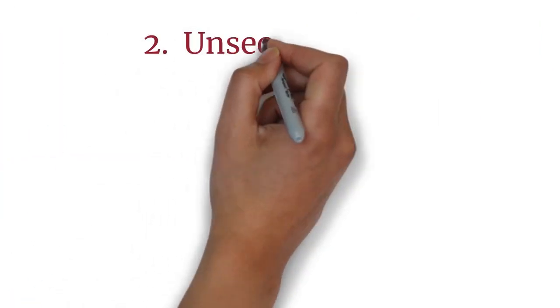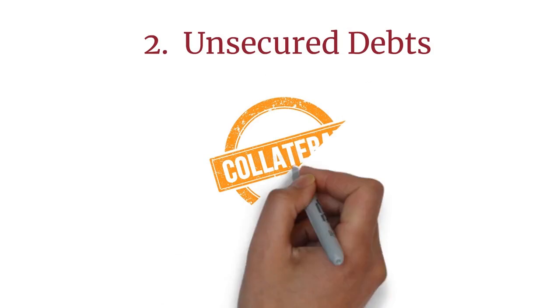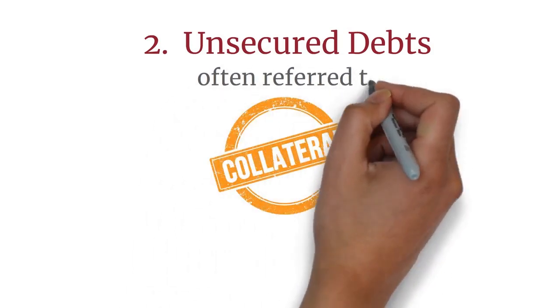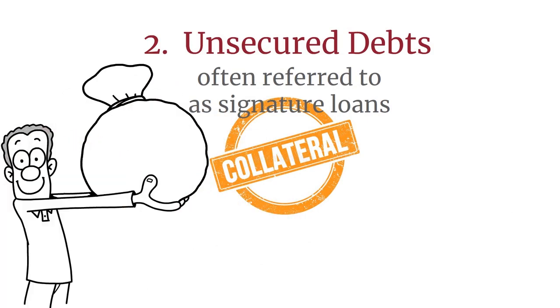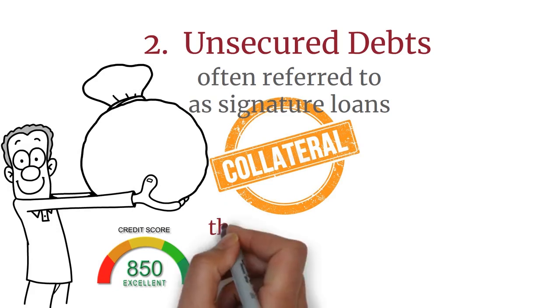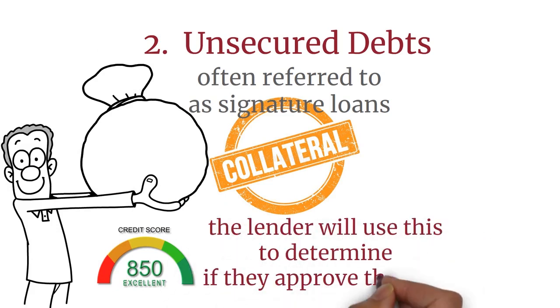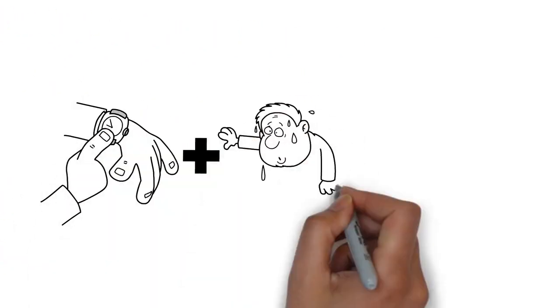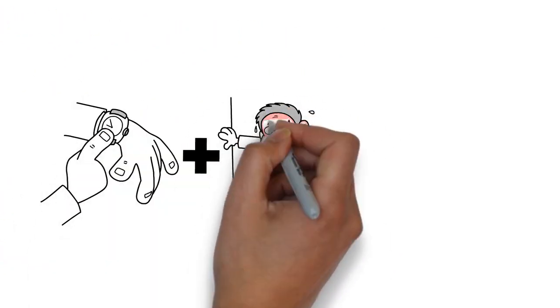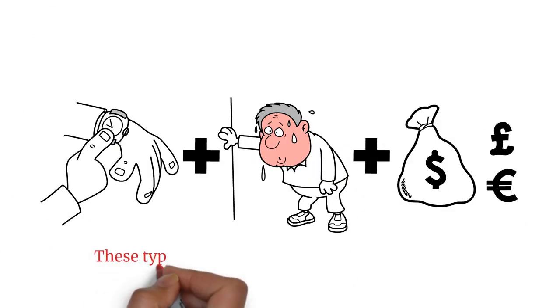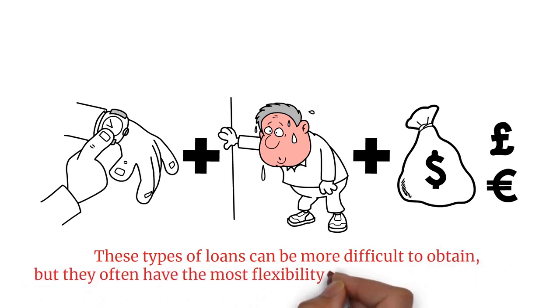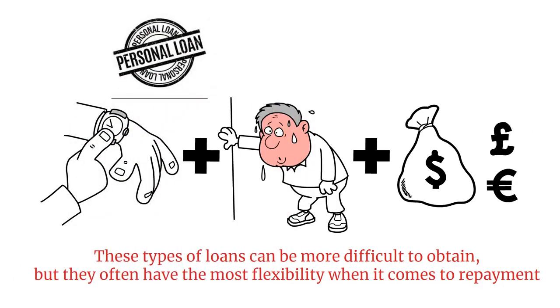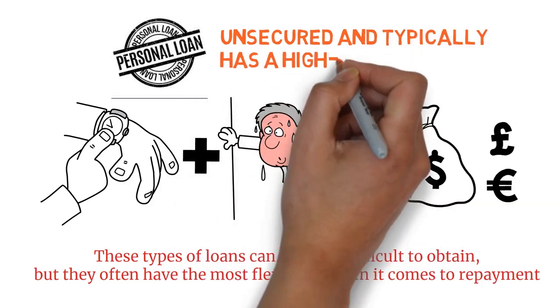Unsecured debts. Unsecured debts do not require collateral and are often referred to as signature loans. To get this type of loan, the borrower must have a good credit score and the lender will use this to determine if they approve the loan. Unsecured debts often come with higher interest rates and shorter repayment times due to lack of collateral. These types of loans can be more difficult to obtain, but they often have the most flexibility when it comes to repayment. A good example of this is a personal loan which is unsecured and typically has a high interest rate.